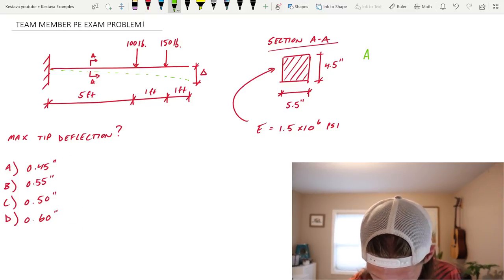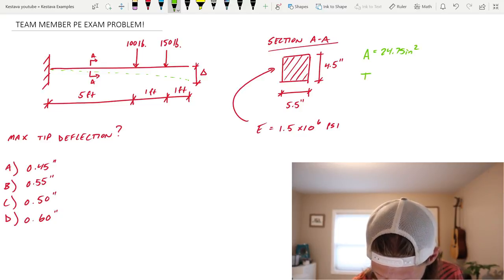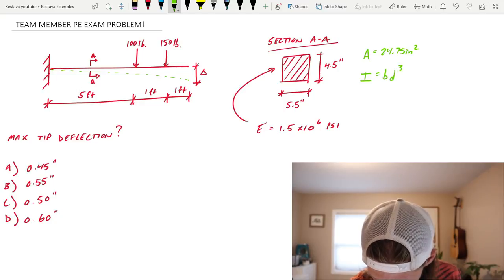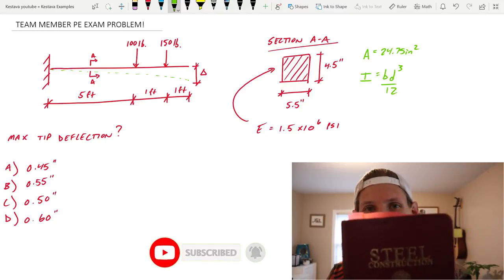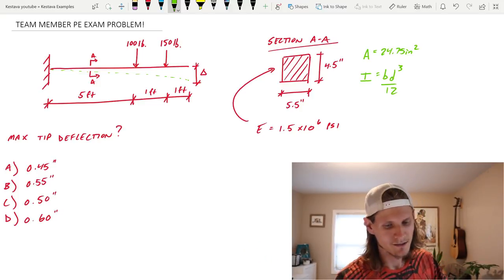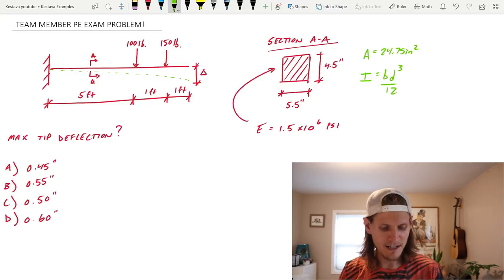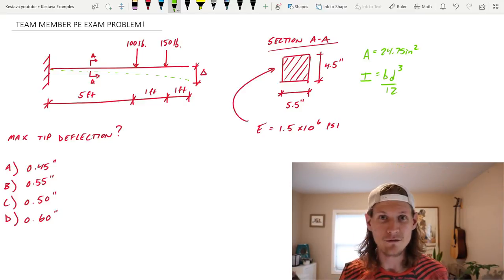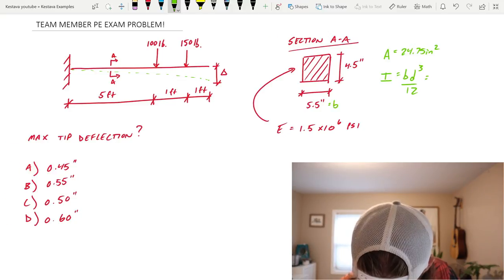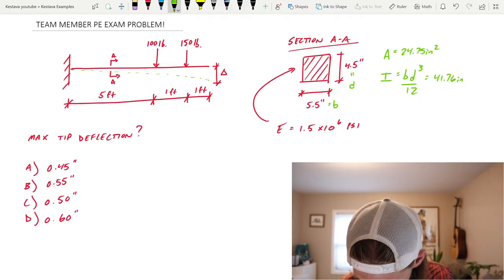All right, let's get the area of our cross section, which is just 4.5 times 5.5 inches. And that equals 24.75 inches squared. And then we also want I for our cross section, which is BD cubed over 12. If you don't know that by heart, this thing has all the answers. You flip to the back, I have tabbed it as section properties. This is in table 17-27. And it gives you geometric equations based on the geometry of your cross section. That's where you can find the equation for I for a rectangle. B is here, D is right there. Plug all that in, that gets us 41.76 inches to the fourth.